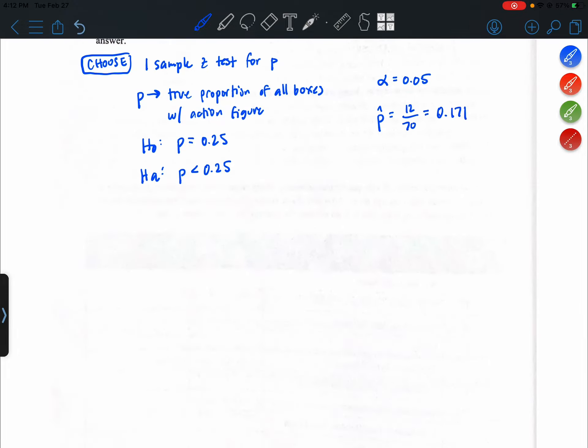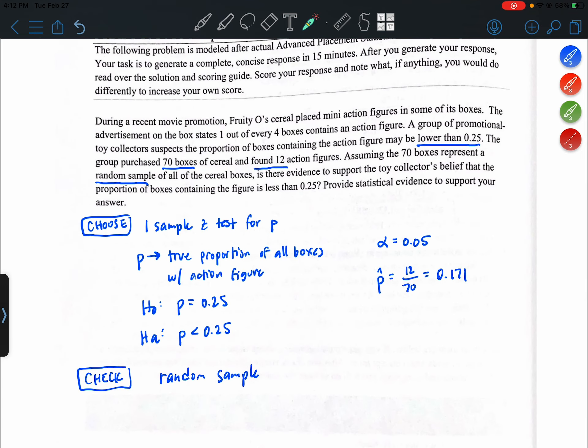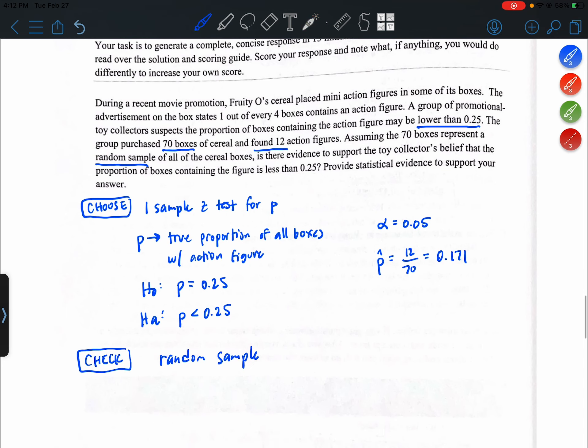So we proceed to the next step. We're going to check our conditions. So, random sample. If we go back to the question stem, it says right here that we can treat it as a random sample. So I'm just going to check that off.